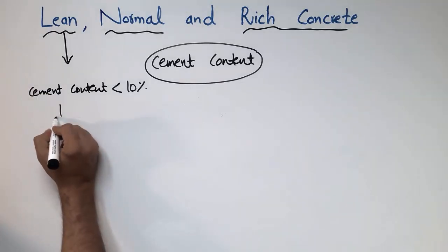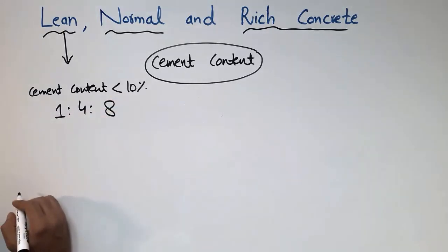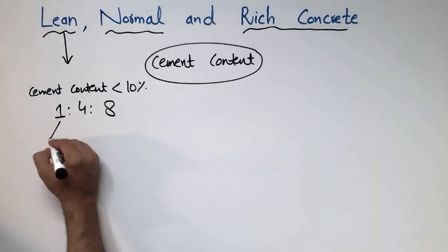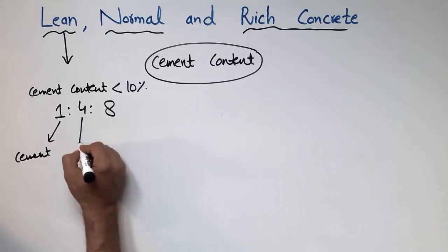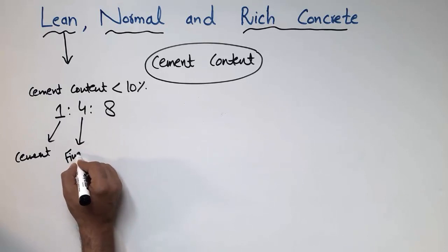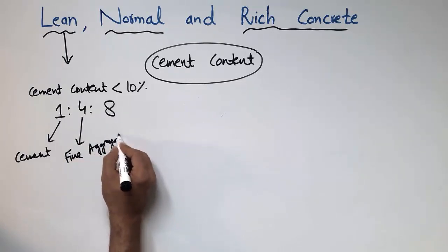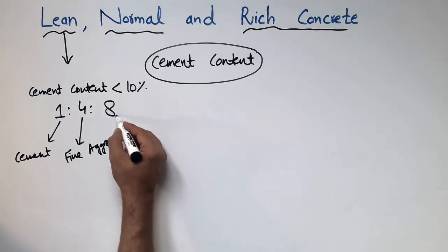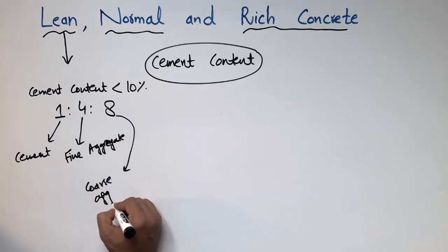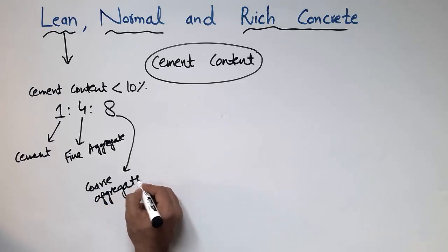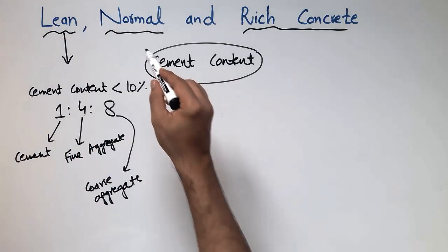The cement content is less than 10% because it does nothing for strength here. The general ratio for this type of concrete is 1:4:8, which is the most commonly used ratio for lean concrete. In this ratio, 1 represents the cement, 4 represents the fine aggregate (sand), and 8 represents the coarse aggregate.